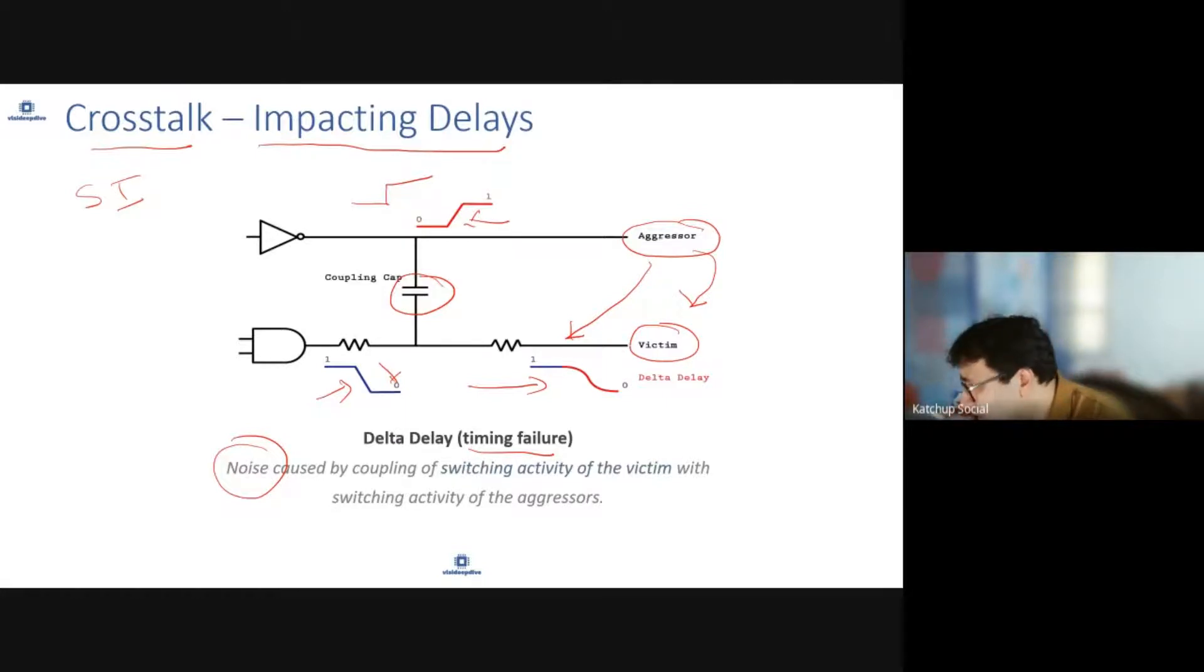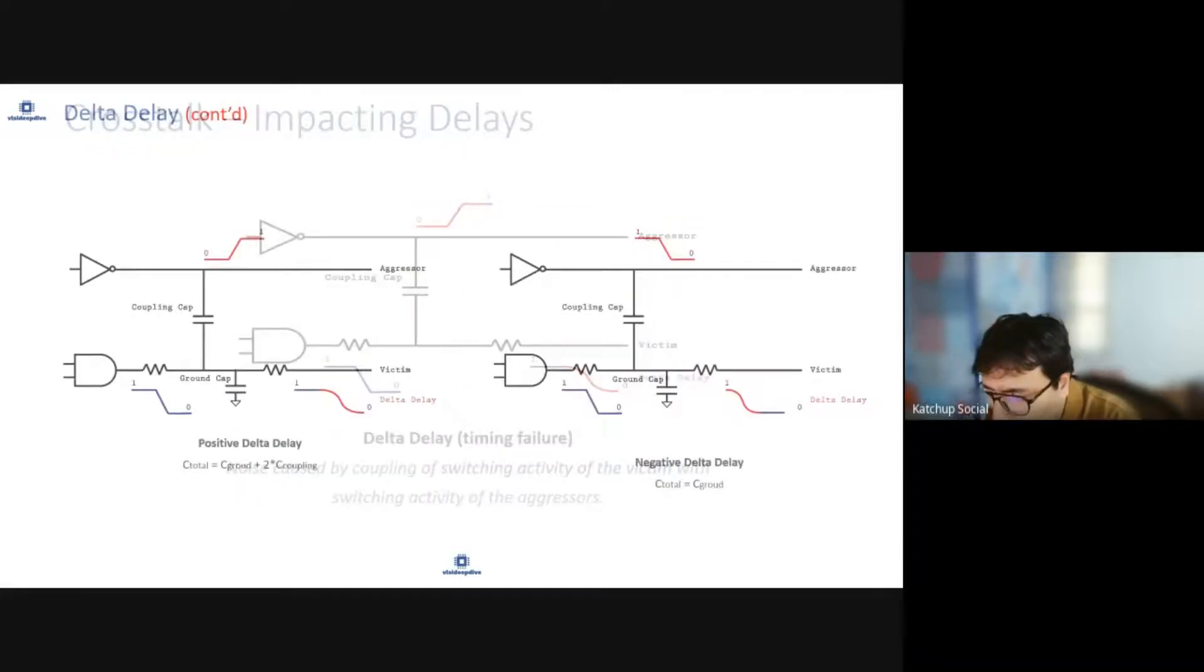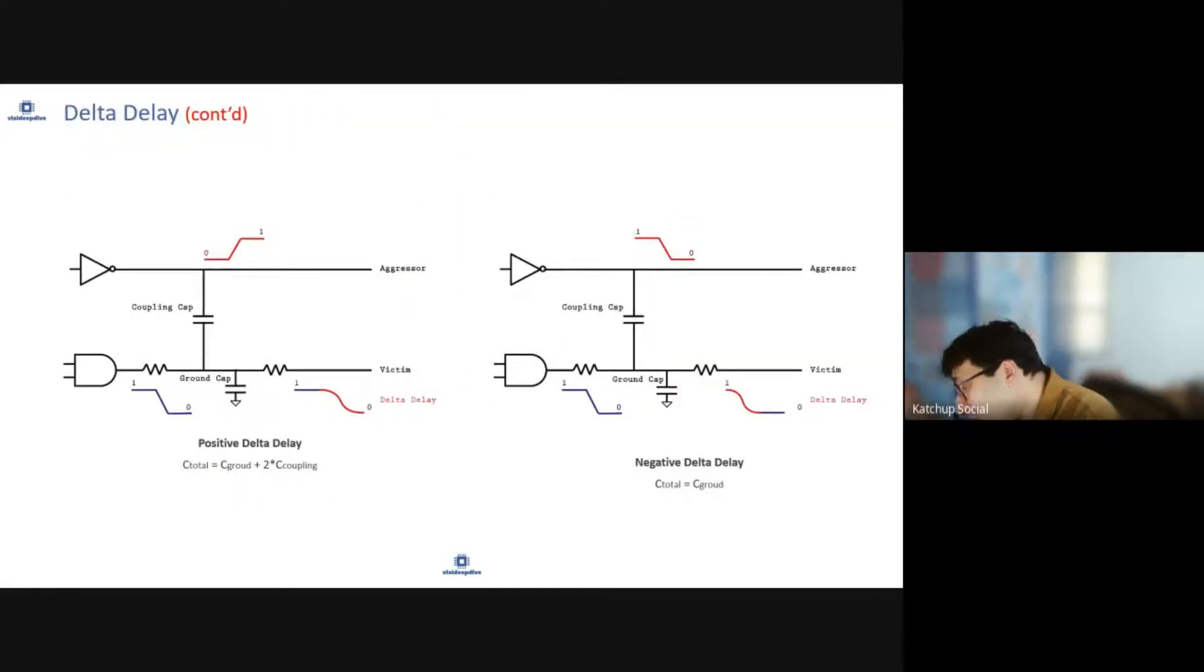One impact of crosstalk is delay. Delay can be useful also; sometimes it may not always be useful. So let's say this signal is changing and the other signal is changing in opposite direction. This is the aggressor, and it is causing an impact on victim, so it introduced an extra delay, because the total capacitance on the design was increased—total capacitance here became coupling capacitance.